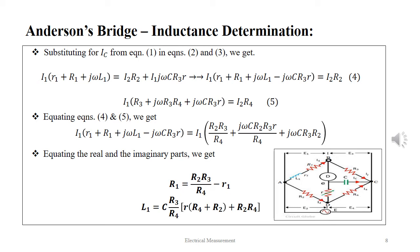Equating the real and the imaginary parts we get R1 equal to R2 R3 by R4 minus small r1 and L1 equal to C into R3 by R4 into small r within bracket R4 plus R2 plus R2 R4.